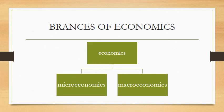Branches of economics. Economics is one of the most dynamic social sciences, and perhaps it is the most vast social science on which a great number of work has been done. Although there are numerous sub-branches of economics, primarily economics has two main branches: microeconomics and macroeconomics.